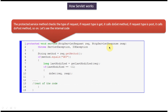The HttpServletRequest and HttpServletResponse objects are passed from the public service method to the protected service method. The protected service method checks the request type using request.getMethod() to identify whether it is a GET, POST, HEAD, or DELETE request. If the method is GET it calls doGet, if POST it calls doPost, if DELETE it calls doDelete. Based on the method type it calls the corresponding doXxx method. This is the internal code of the protected service method, and that is how servlet works. Thanks for watching.